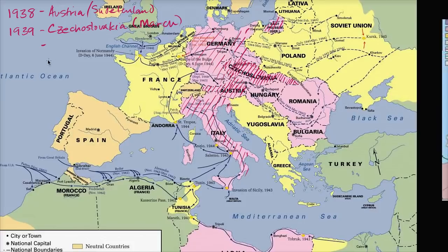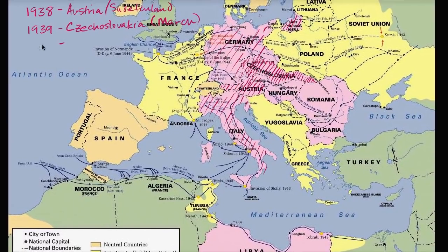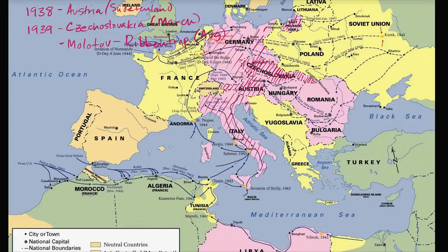Then in August, in preparation for the all-out war that's about to happen, the Germans — who don't want to fight the Soviets right out of the gate — get into a pact with the Soviet Union. They sign the Molotov-Ribbentrop Pact in August, which is essentially mutual non-aggression. They secretly agreed to create spheres of influence, where Germany can take control of part of the region and the Soviet Union — with Stalin in charge — can take over other parts.